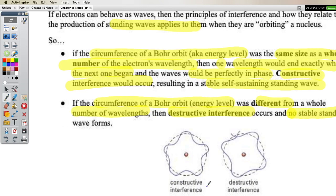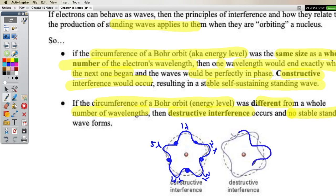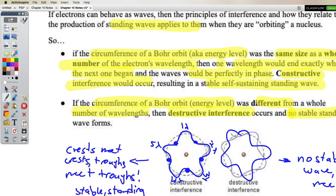If the circumference of a Bohr orbit is different from an integer number of wavelengths, destructive interference occurs and no stable standing wave forms. For constructive interference, counting the wavelengths gives an integer number — one, two, three, four, five — and as the wave continues, crest meets crest and trough meets trough. But when an integer number doesn't fit, the wave continuing around produces trough meeting crest — destructive interference. No stable standing wave is produced in that case, whereas with an integer number, constructive interference always occurs.